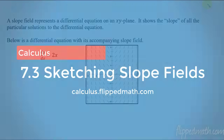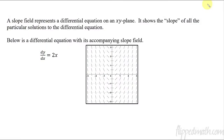A slope field is a graph that represents a differential equation. It is the slope of every possible answer to a differential equation — like what y equals originally. These are all the possible graphs that it would look like. It shows tiny little hash marks all over the place that represent the slope at that particular point.